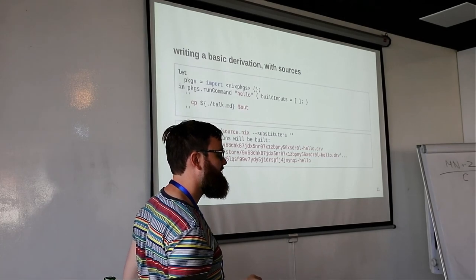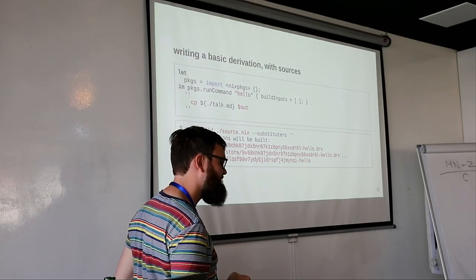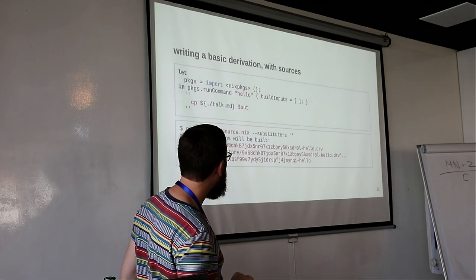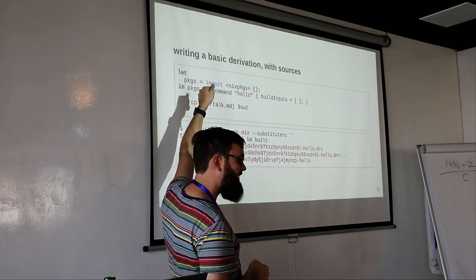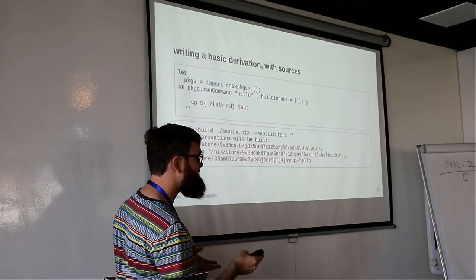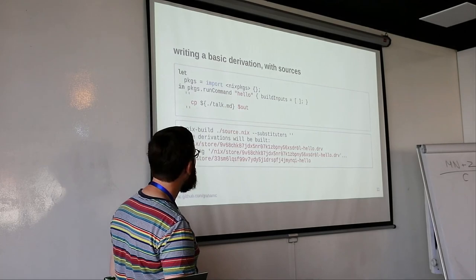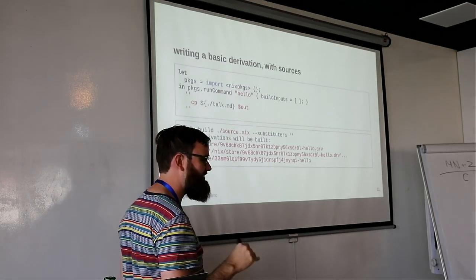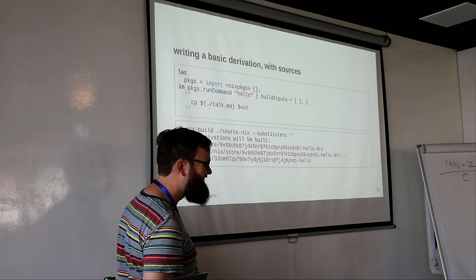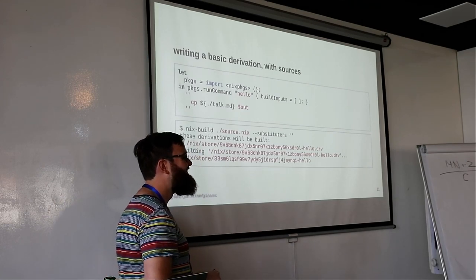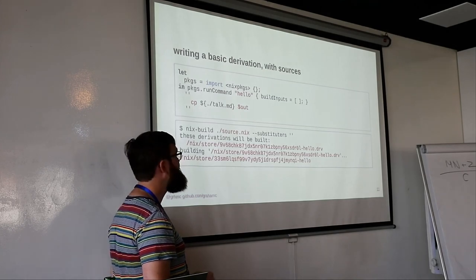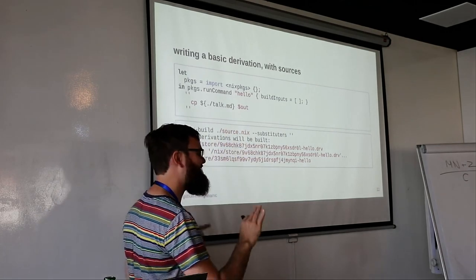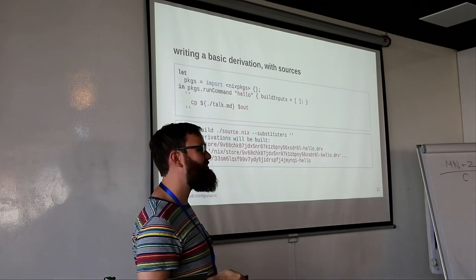Q: The output path of the talk.md file is not shown in the nix build output — why? It is not a build. So if it's copied in automatically, it doesn't need to do anything to produce that. Q: Could you debug by putting set -x in the build script? Yes, you could toss a set -x in there and it would show what's going on. Nix build would capture that and you'd see it on the console as build output.